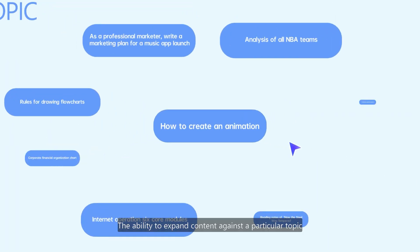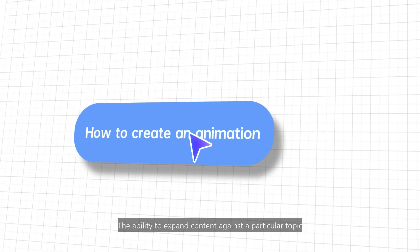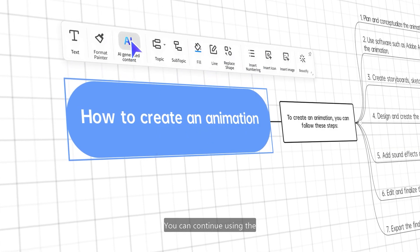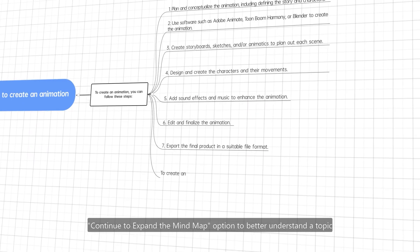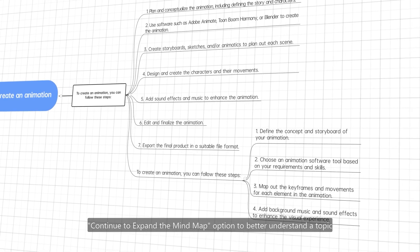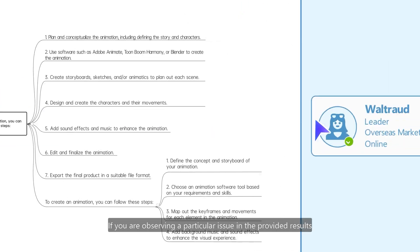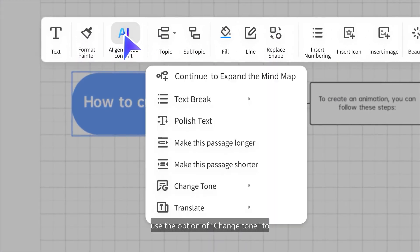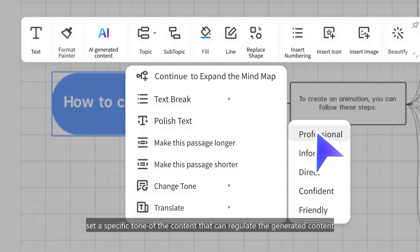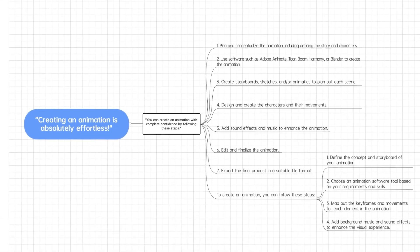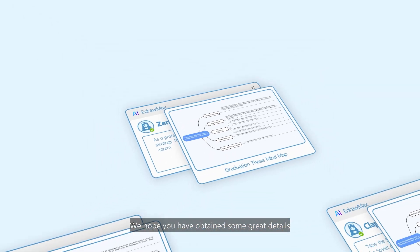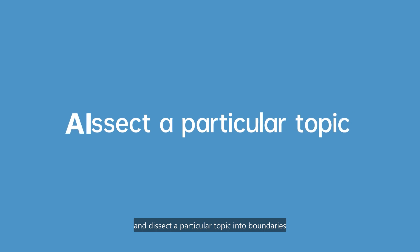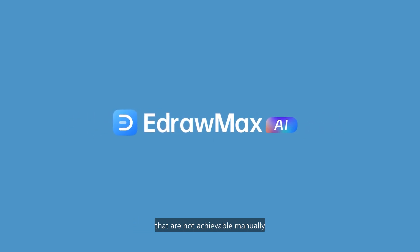Expand your knowledge with the topic and get better results. The ability to expand content against a particular topic does not end — you can continue using the 'Continue to Expand' option to better understand a topic. If you observe a particular issue in the provided results, use the 'Change Tone' option to set a specific tone for the generated content. We hope you have obtained some great details about simplifying your life using EdrawMax, and can dissect a particular topic into boundaries that are not achievable manually.